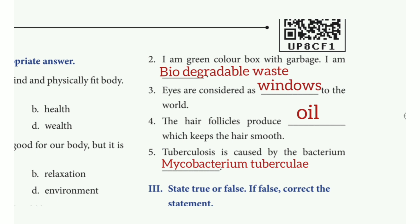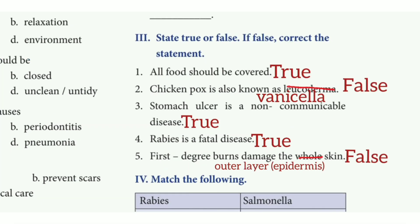4th one: The hair follicles produce — which keeps the hair smooth. The answer is oil. 5th one: Tuberculosis is caused by the bacterium — the answer is Mycobacterium tuberculosis.